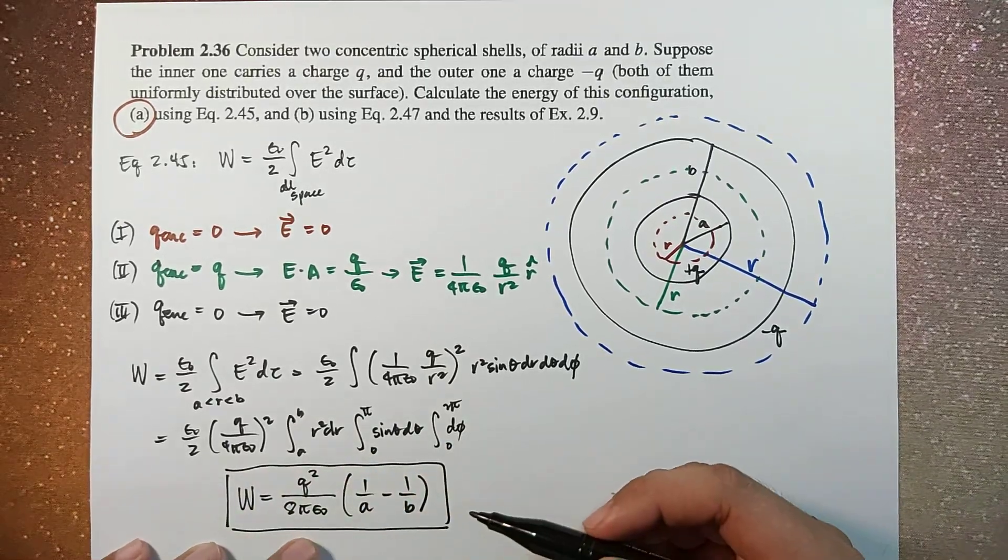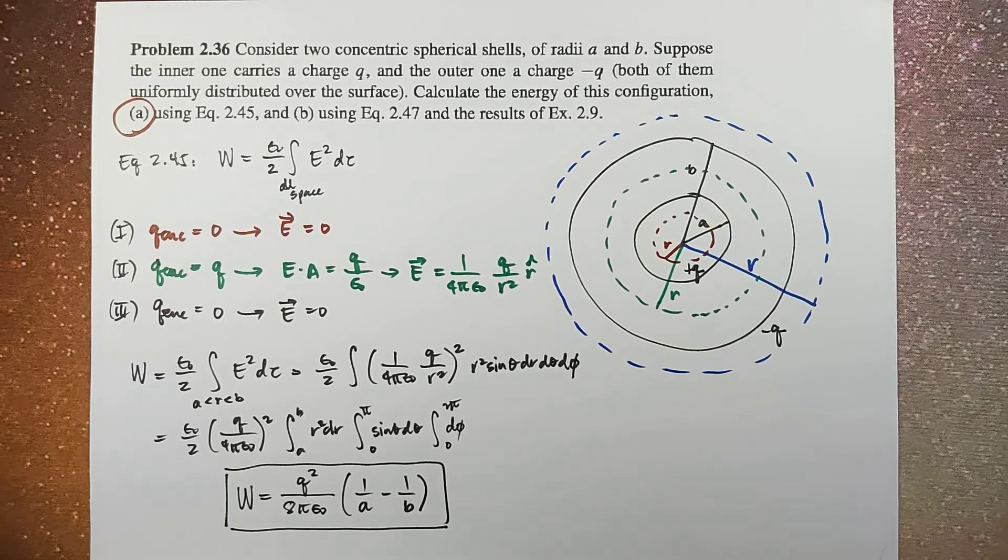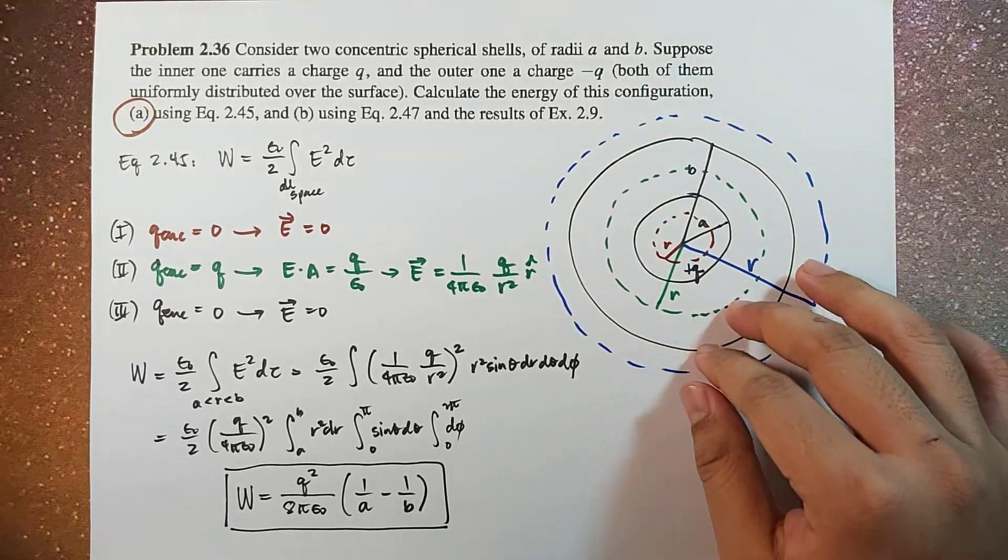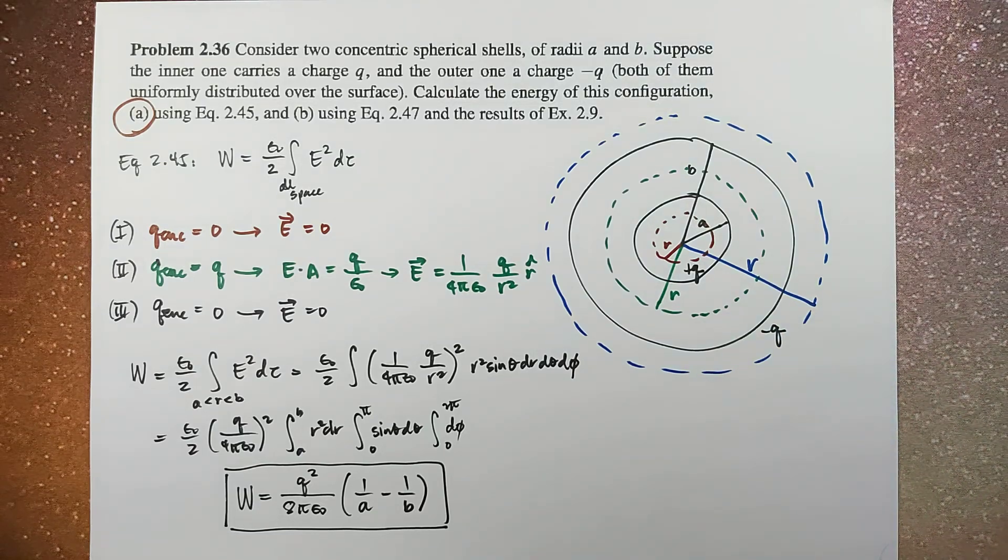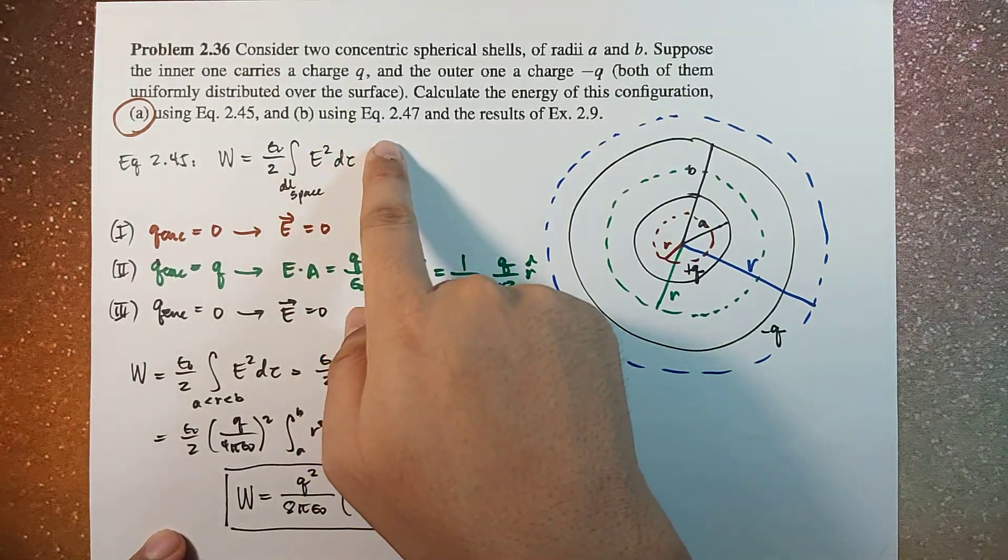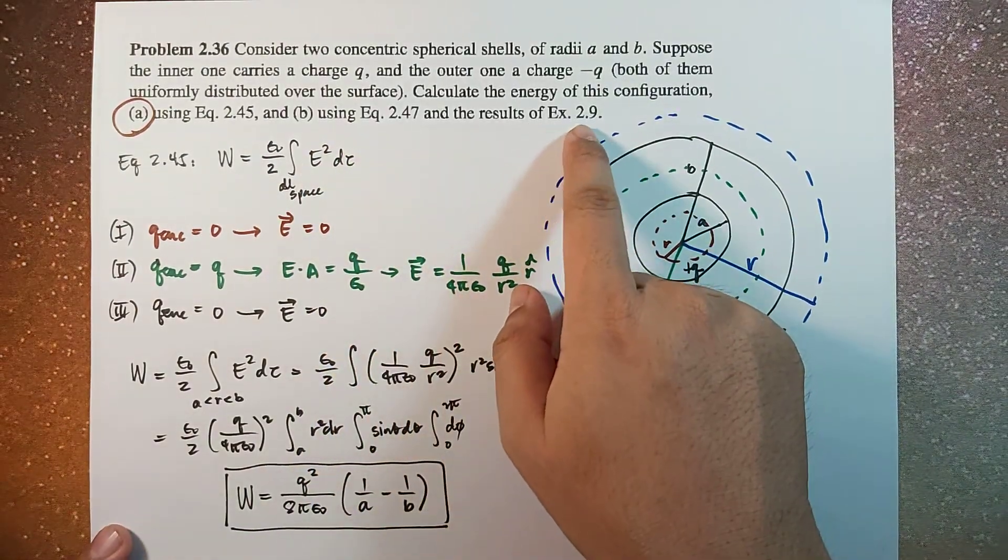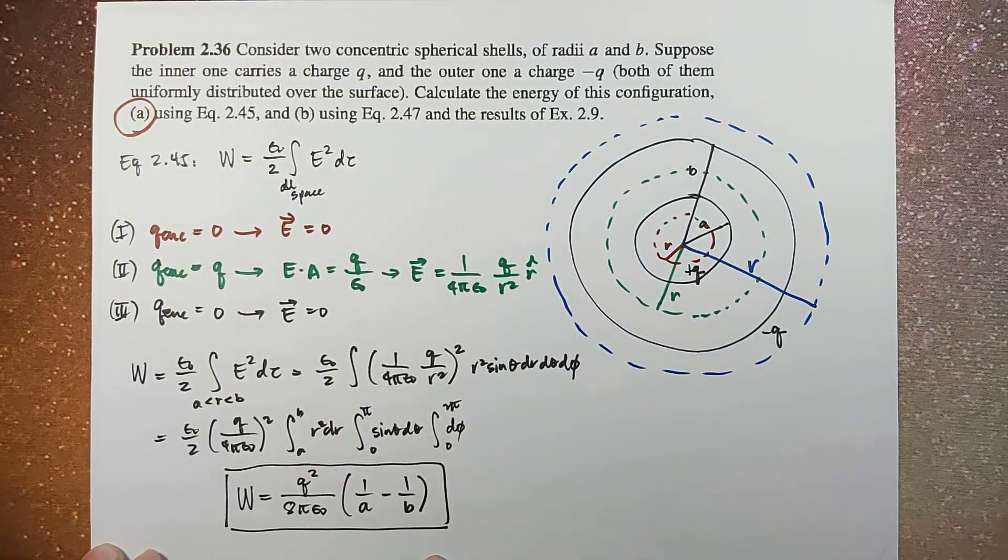This is now the total work done, or the total energy stored in this configuration of two concentric spherical shells. And we expect that by using equation 2.47 for letter B, and the results of example 2.9, we'll be able to obtain the same results.